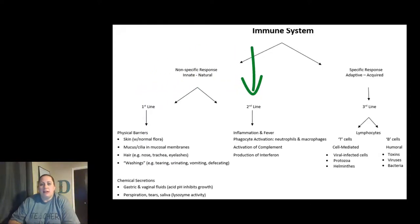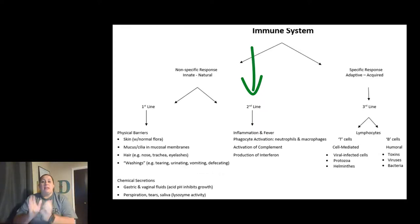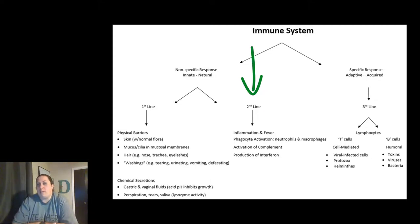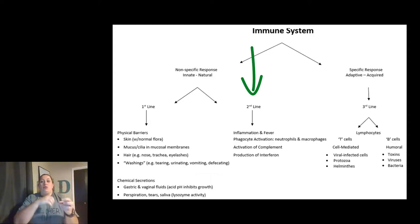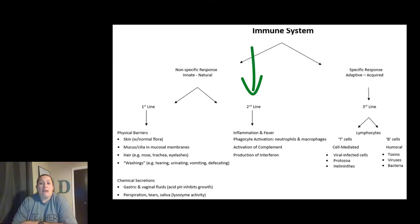If something gets past that first line of defense, the second line has to kick in. The second line of defense includes inflammation and fever. We also see phagocytic activation — certain white blood cells called phagocytes are going to eat or consume the invader and destroy them inside their own cell, like Pac-Man. These are your neutrophils and macrophages. We also see a set of chemicals called complement that are constantly going through your body — mostly inactive, but if triggered by injury or an invader, complement one triggers complement two then three in a cascade domino effect, helping slow down the invader.